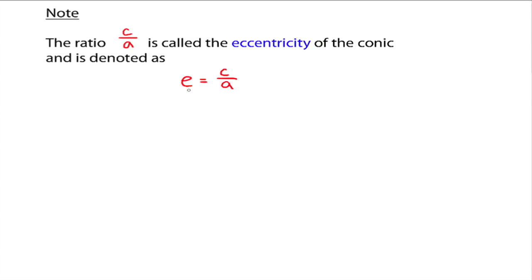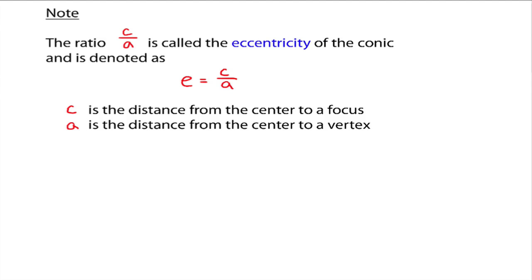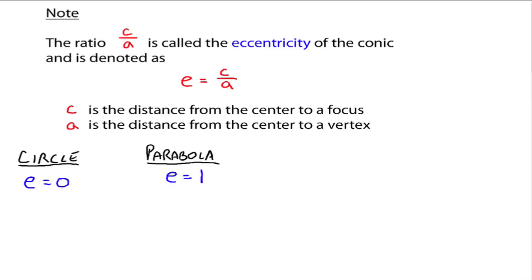This e denotes the eccentricity of our conic section, and it's c divided by a, where c is the distance from the center to a focus, and a is the distance from the center to a vertex. For the circle, because the distance from the center to a focus is zero — there's no focus; we have the center and then go out to the circle — by definition we say e is zero. For the parabola, the eccentricity is defined to be e equals one. So the circle and the parabola are the boring two of the four.